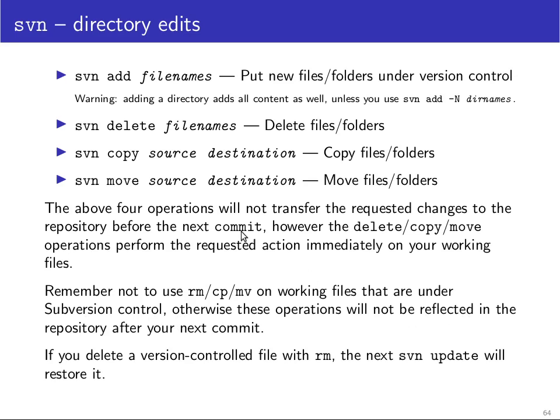For example, if you delete a file just with rm, it will pop back into existence at the next svn update, because Subversion wasn't told that the file wasn't meant to be there, so it puts it back into place. You can use things like copy or move if you need to make local copies, but not if you actually want these changes to be reflected in the repository.